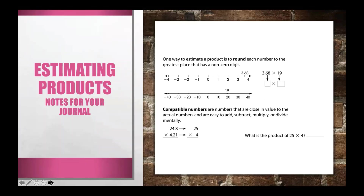Let's take a closer look at what was covered in the video. One way to estimate a product is to round each number to the greatest place that has a non-zero digit. We have the example 3.68 × 19, with a number line showing 3.68 placed between 3 and 4. The number is closer to 4. Using our rounding rules, we look at the greatest place, which is 3, then look at the digit to the right. Since 6 is in the range 5 through 9, we round 3.68 up to 4.